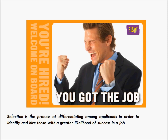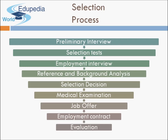The selection process involves: preliminary interview, selection tests, employment interview, reference and background analysis, selection decision, medical examination, job offer, employment contract, and evaluation. Once job applications and resumes are received from recruitment, we filter them. If a resume is suitable for the profile, we call the person for a preliminary interview — in person or by telephone. Then various selection tests are taken depending on the profile applied for.